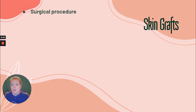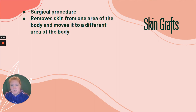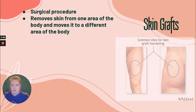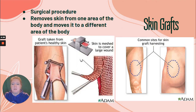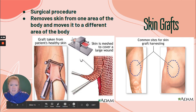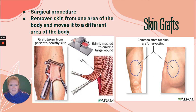Skin grafts — what is it? It's a surgical procedure that removes skin from one area of the body and moves it to a completely different area. Typically it's taken from the buttocks or the thigh area, and a mesh appliance is used to give the skin a mesh appearance so that we can cover a greater surface area with less skin.